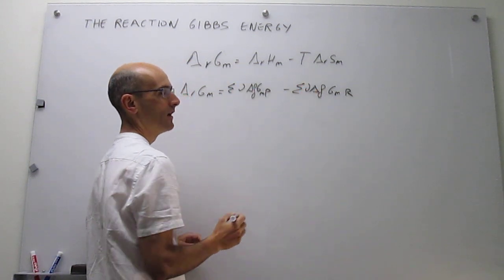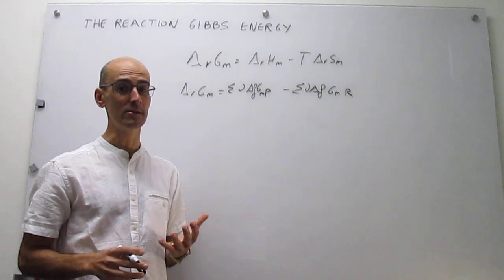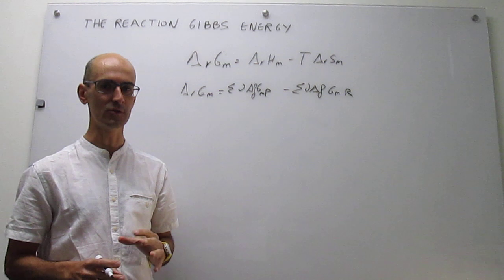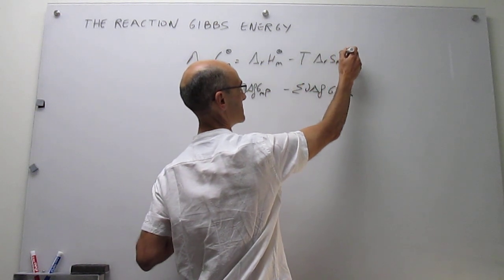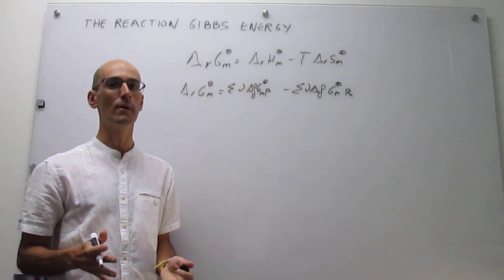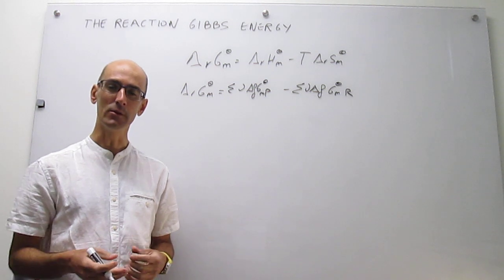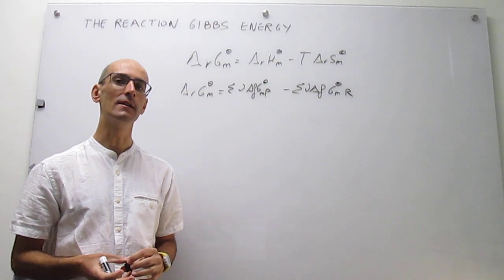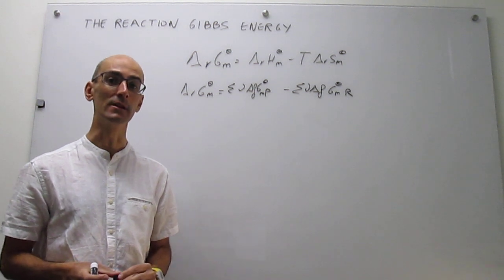There is a huge limitation to these recipes: the data needed to calculate the reaction Gibbs energy is always under standard conditions. These expressions all carry a superscript referring to standard conditions, which means one bar of pressure for pure substances and gases, and a concentration of one molar for substances in solution — which is really highly concentrated.